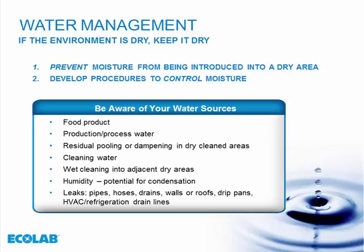Moving into water management — dry environments are rarely completely dry. We want to look at how we manage water coming into our plant, and the two key approaches are prevention and control. First, if at all possible, prevent moisture from being introduced into a dry area. But if water does come in, have procedures already developed to control that moisture — know how to clean it up and get it out. We really want to think from a bacteria's perspective: what is the bacterial risk of water coming into an environment?